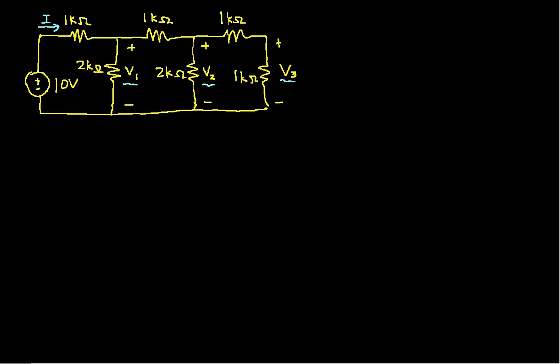What we can do is find equivalent resistances — and there's actually a whole video where the equivalent resistance of a ladder network is found. We can use that same technique of finding equivalent resistances to find the voltages we want. We'll use equivalent resistance to find V1 first. Once we've found V1, we can go back to a second equivalent resistance that we will have already computed to find V2, and once we've done that we can find V3. V1, V2, and V3 will all be found using a simple application of the voltage divider.